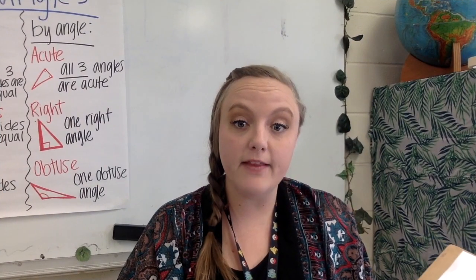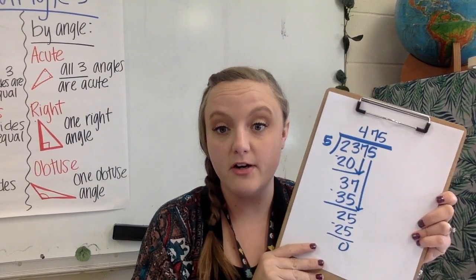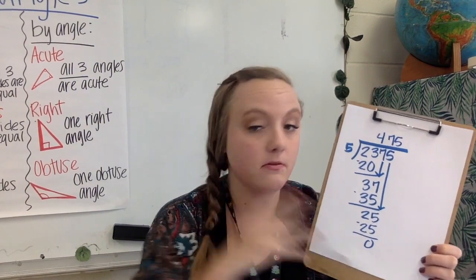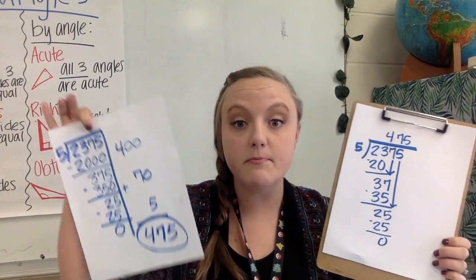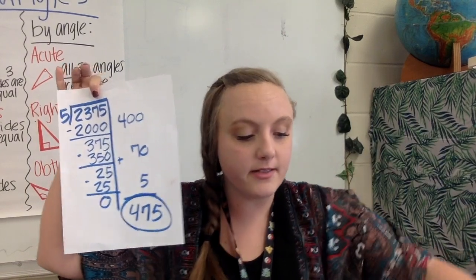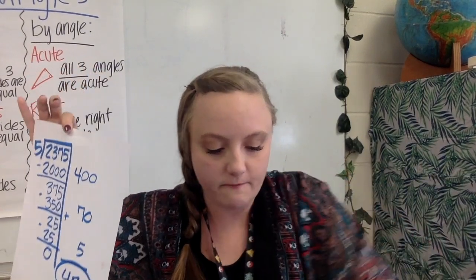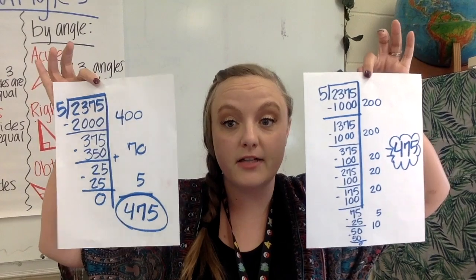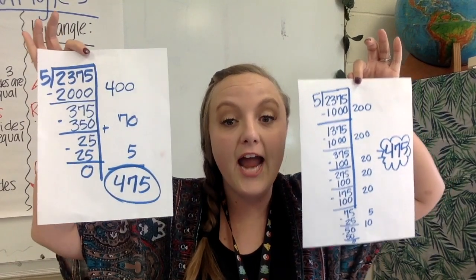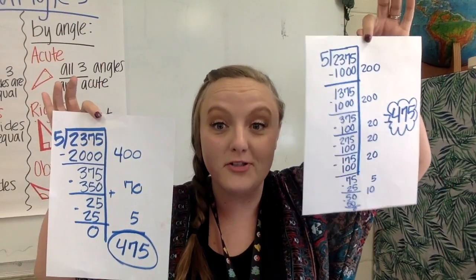I saw some similarities between the partial quotients method and the standard algorithm. This is the standard algorithm or the traditional way and this is my partial quotients method. I'm favorable to this and I want you to just look at these two pieces of paper real quick and see the similarities. Now, I know this is a lot quicker to the answer than this.